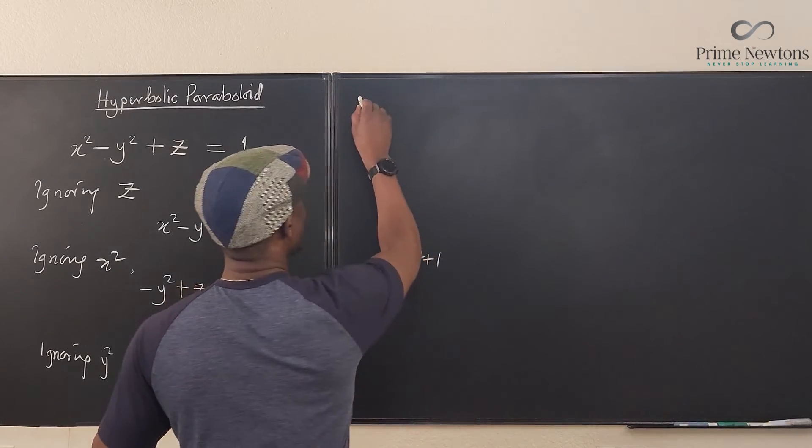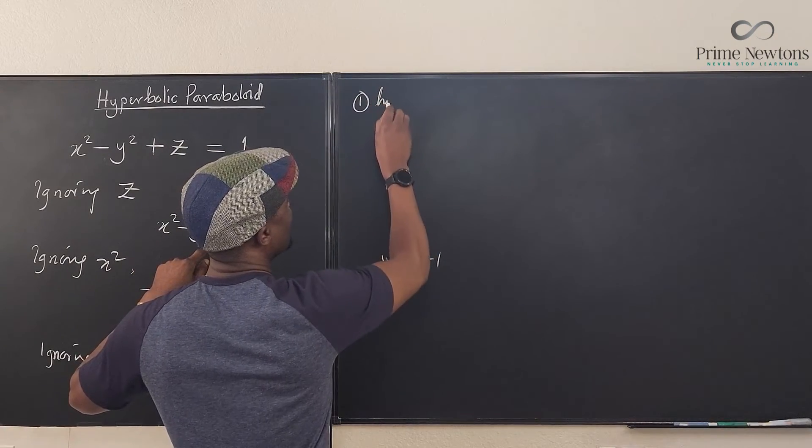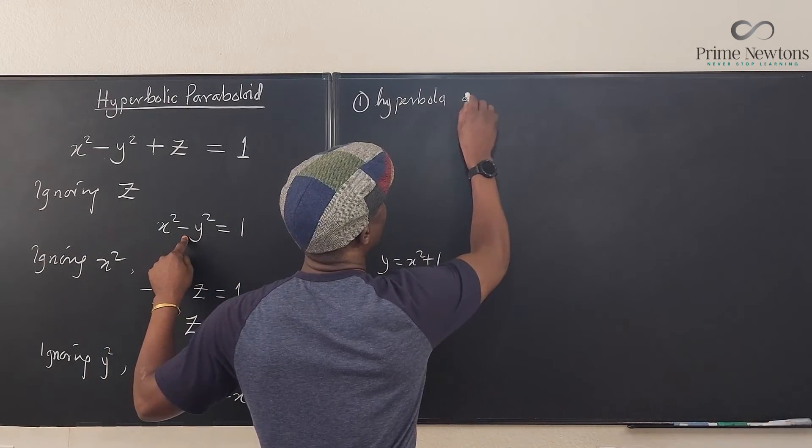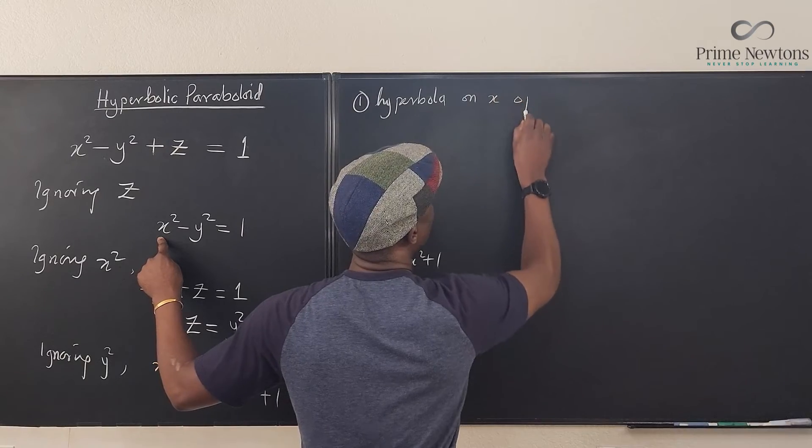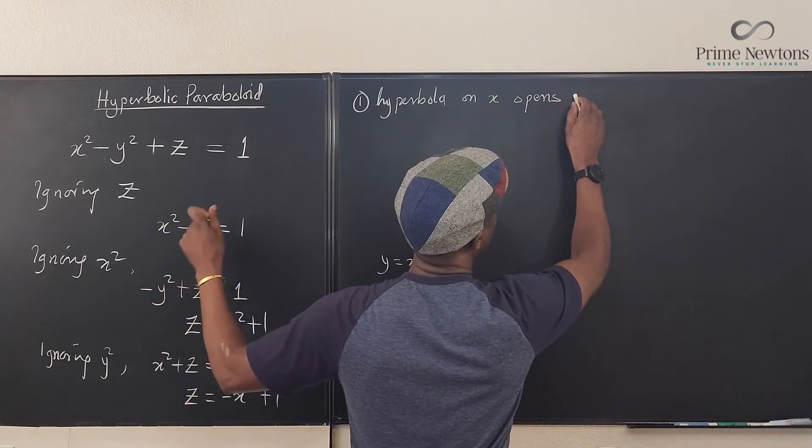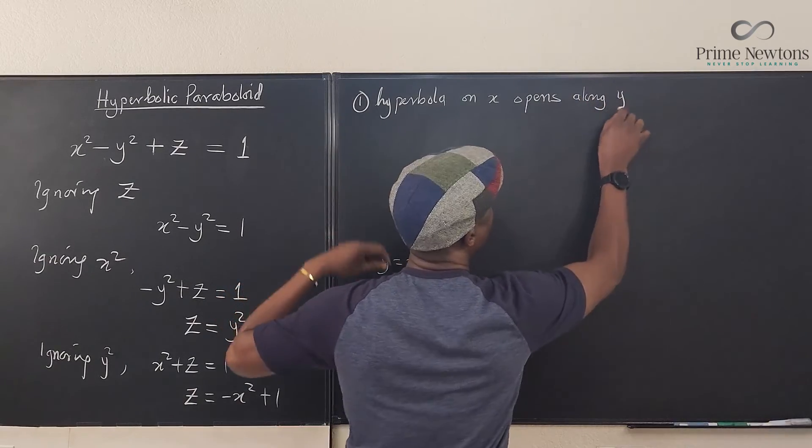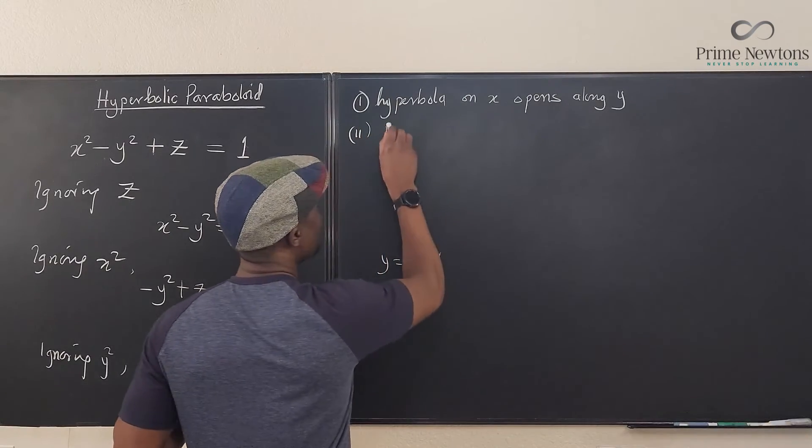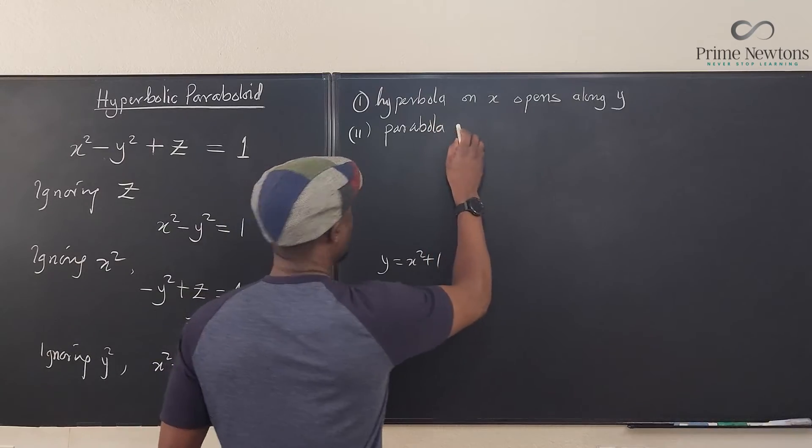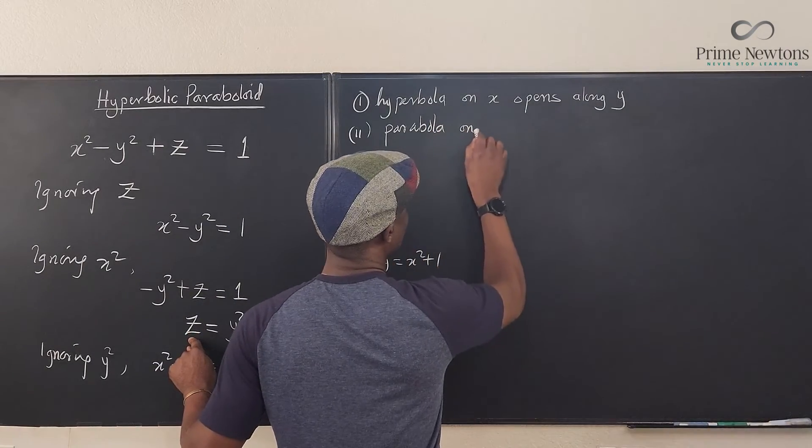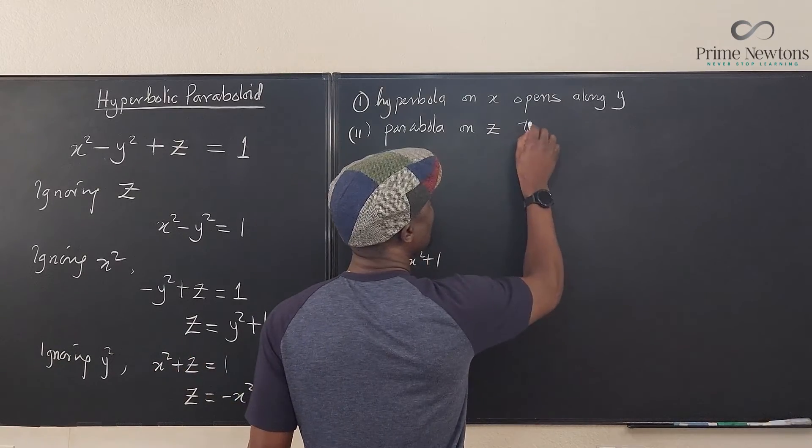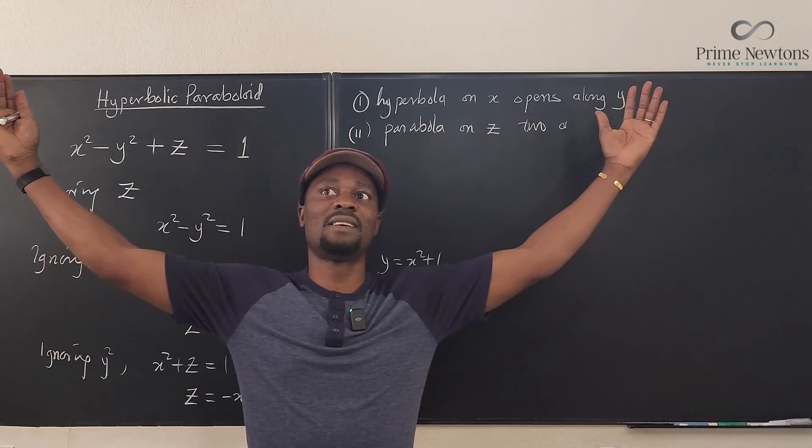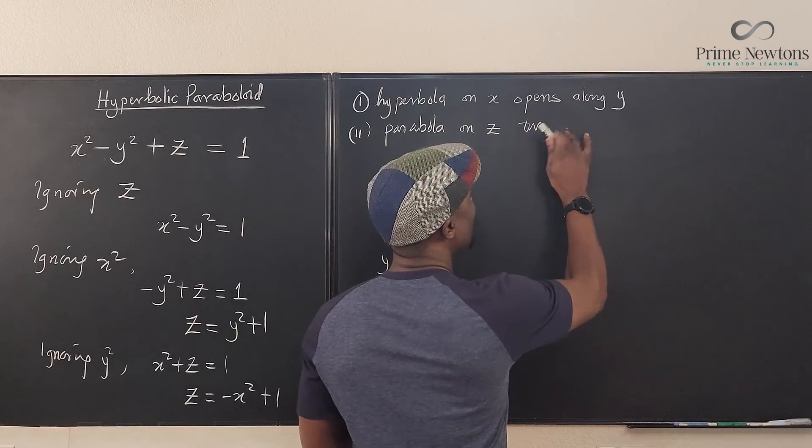So what do we have? We're going to have a hyperbola that opens along y. Then we have a parabola, and this parabola is going to be on z with two y arms. It's going to have two arms, it's going to go up like this and the arms are y arms.